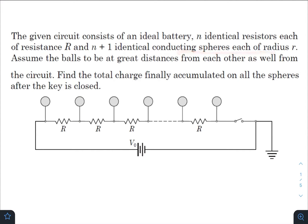Assume the balls to be at great distances from each other as well from the circuit. Of course, that means there would be no induced charges due to the interaction of two consecutive spheres. Find the total charge finally accumulated on the spheres after the key is closed. So this is the circuit.